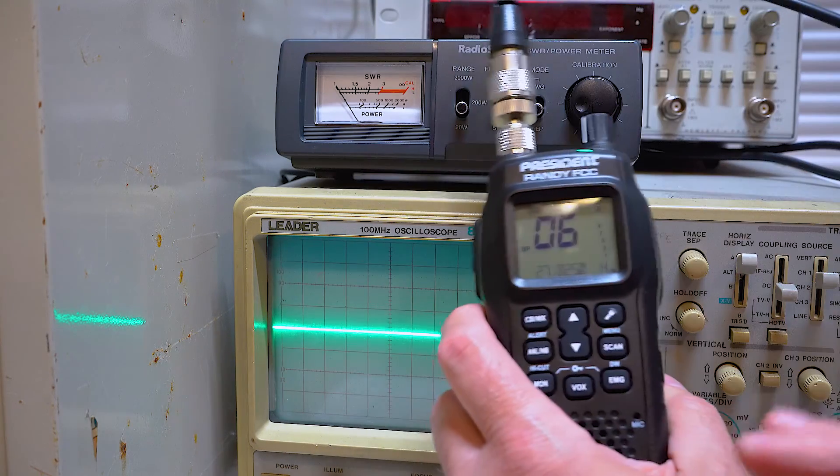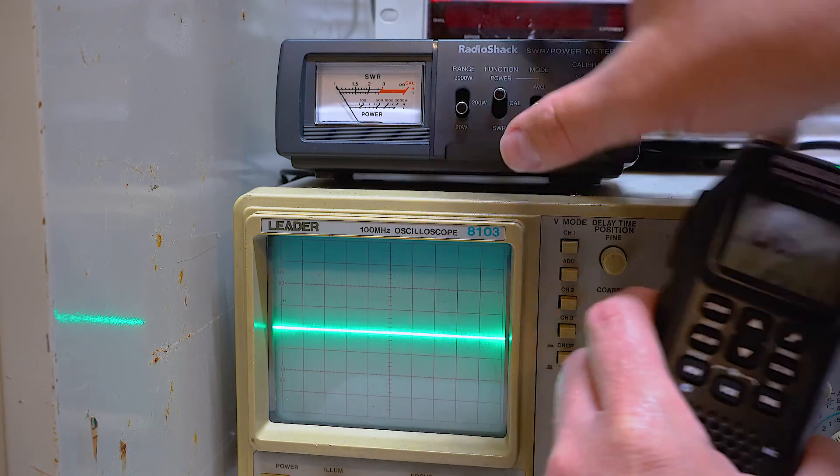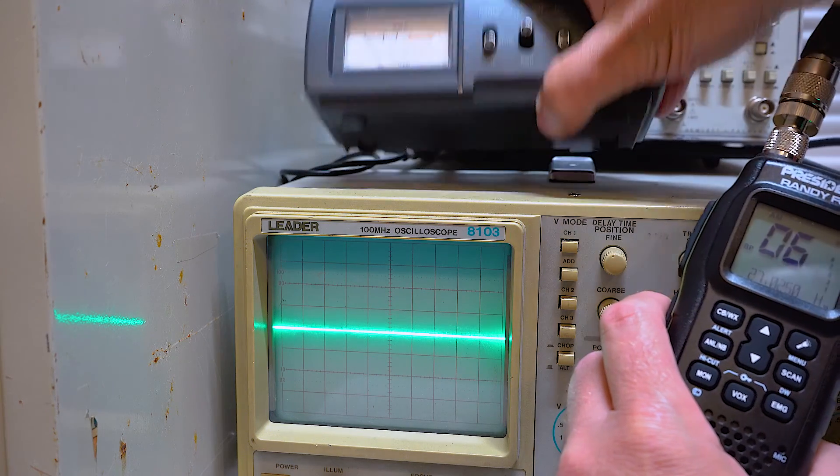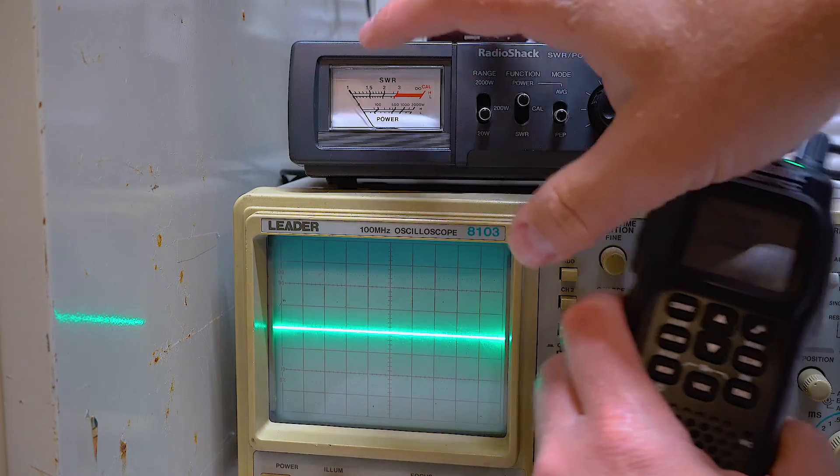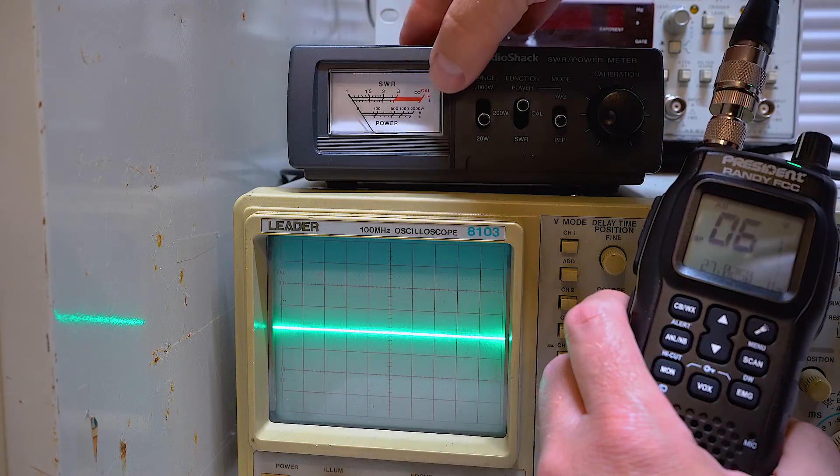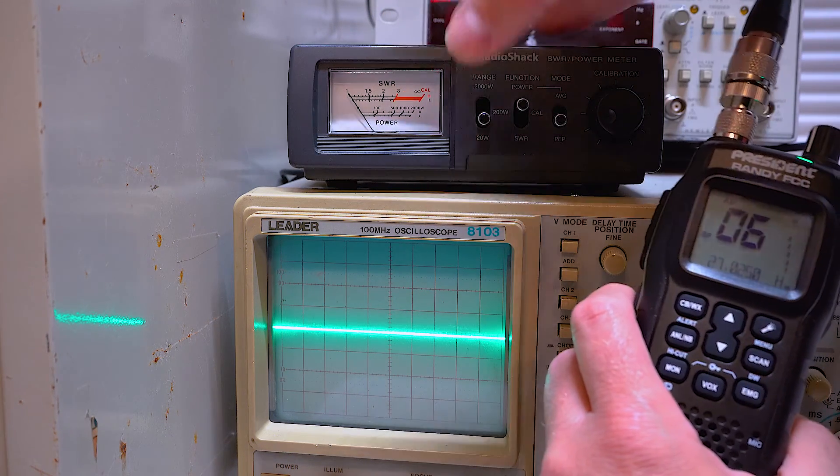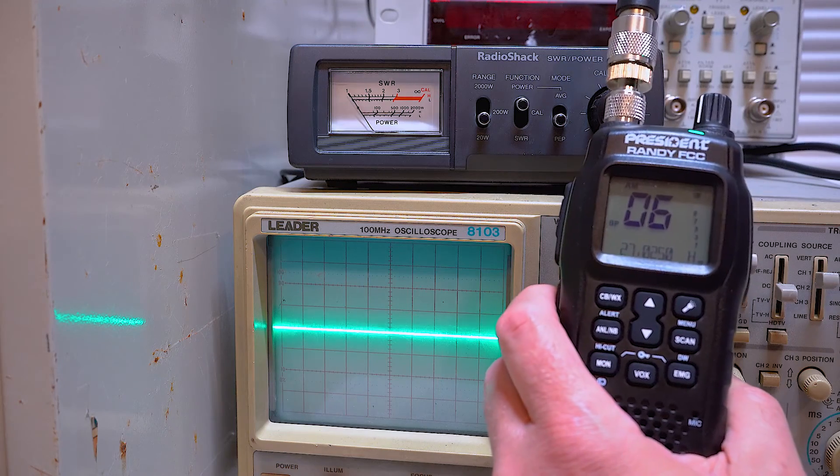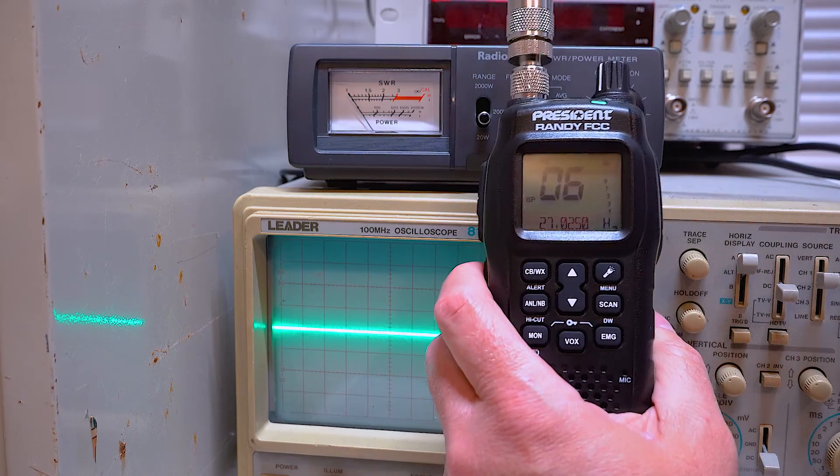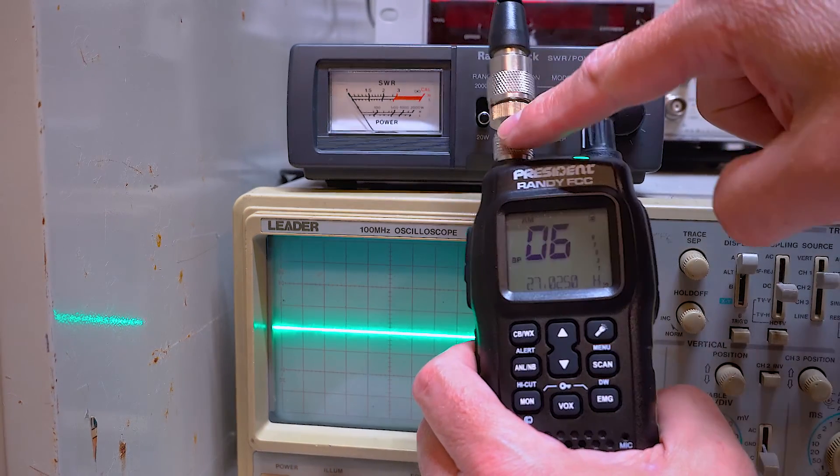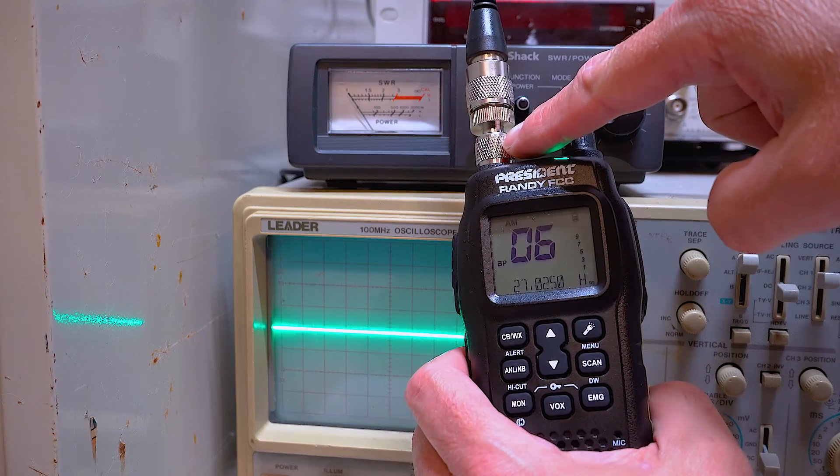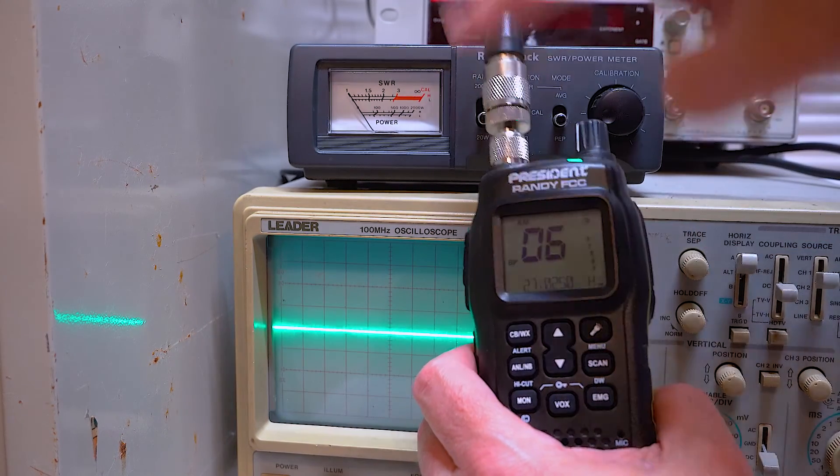First of all, you need the equipment. I kind of did a temporary setup here. I've got my oscilloscope, I've got a portable meter I set up. I was able to put it on top here so we should be able to see. This has a 20-watt scale down on the bottom here, so we're going to use that. This is a pretty accurate meter, I would say, and it'll be easy for this purposes to work.